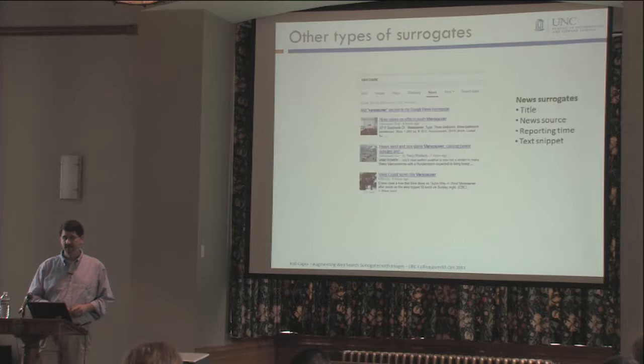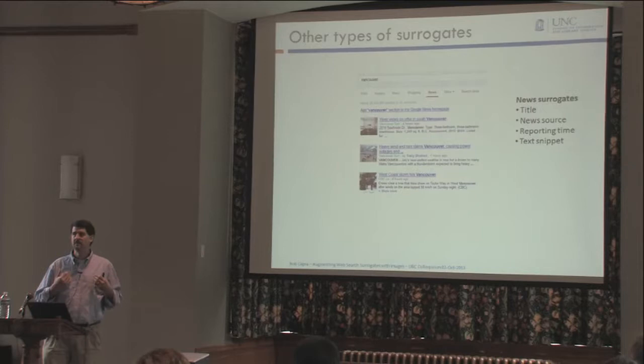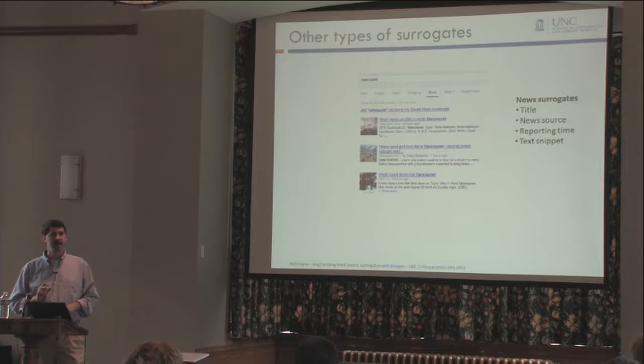Web result surrogates — surrogates for web pages — typically consist of a title, a URL, and a text snippet. But there are other kinds of surrogates. If I click on the news links to see news for Vancouver, those surrogates are a little different. They still have a title, but now they tell me the news source, the time the story was reported, and they give a text snippet. And you might notice there's another component: images.